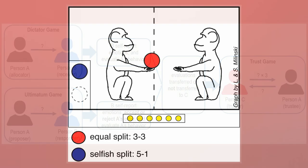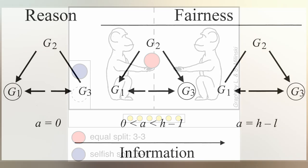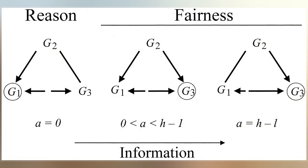One player, the proposer, is endowed with a sum of money. The proposer is tasked with splitting it with another player, the responder. Once the proposer communicates their decision,